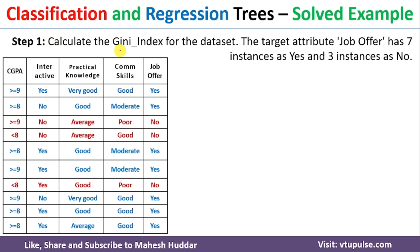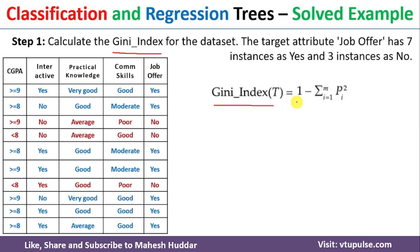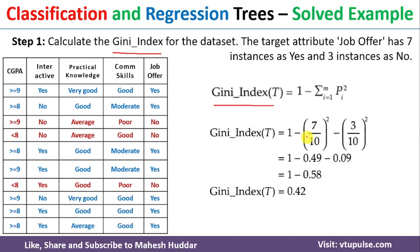In the first step of the CART algorithm, we need to find the Gini index of the whole dataset with respect to the target, that is job offer in this case. There are totally 10 examples — seven are Yes examples and three are No examples. The Gini index of the whole dataset equals 1 minus the summation of P_i squared, where M is the total number of classes and P_i is the probability of a given class. The probability of Yes is 7/10 and No is 3/10, giving: 1 − (7/10)² − (3/10)² = 0.42. This is the Gini index of the whole dataset with respect to the target.